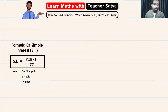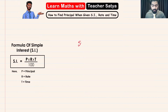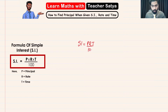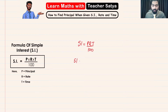So step number one, what we will be doing is we will be using the simple interest formula and we will write a formula where we solve for the principal, or P. Let's start off by writing the simple interest formula. The simple interest formula is P×R×T over 100. Now what I'm going to do is transpose the 100 to the other side by multiplying. So SI multiplied by 100 is equal to P×R×T.